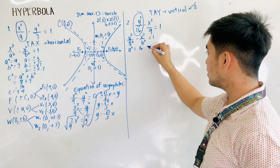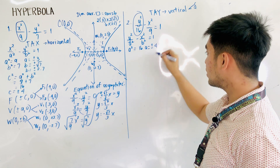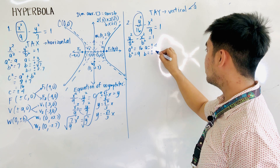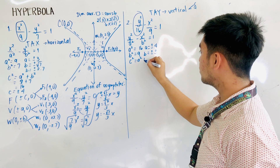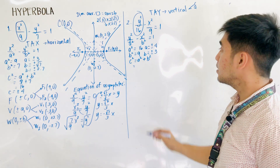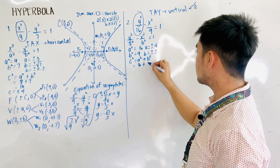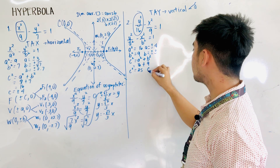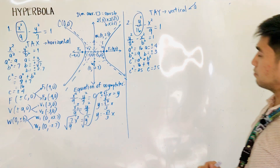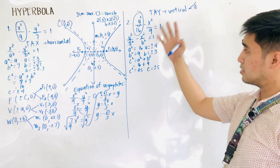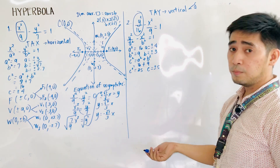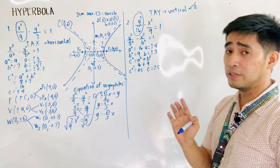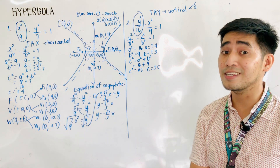We now compute the values: a squared is equal to 16, so a is equal to plus or minus 4. b squared is equal to 9, so b is equal to plus or minus 3. Therefore, c squared equals a squared plus b squared — that is 16 plus 9 equals 25, so c is equal to plus or minus 5. Since this is a vertical hyperbola, we will be changing the y-coordinate of the center for the foci and vertices.